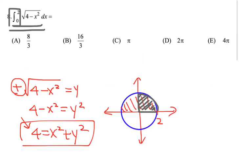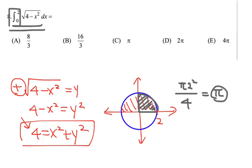What is the area of the quarter circle? The area of the entire circle is pi times 2 squared, because the radius is 2 — but this is a quarter of a circle, so we divide by 4. We end up getting pi as the answer. Choice C becomes the answer.